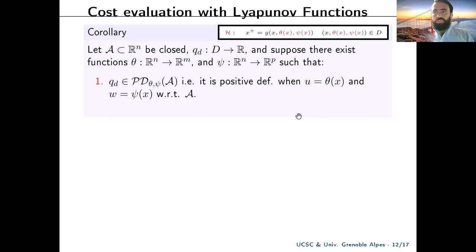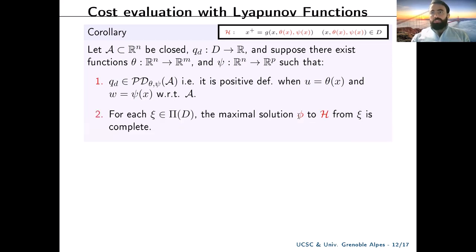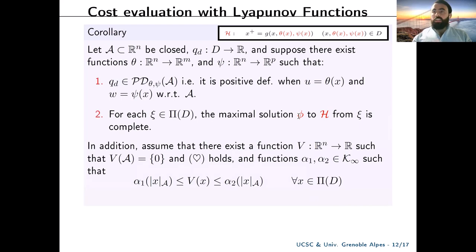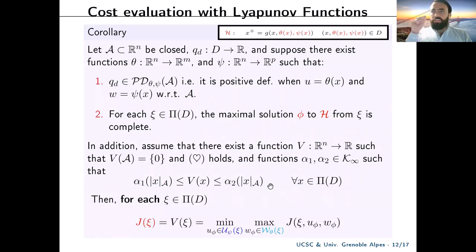In the case where the stage cost is positive definite when both players play optimally with respect to calligraph A, and for each initial condition the maximal solution of the closed-loop system is complete, and if B is bounded by class K-infinity functions alpha-one and alpha-two, and B vanishes in calligraph A, and the discrete Isaacs equation holds, then for each initial condition in the projection of the playable set in the state space, the cost is exactly B of the initial condition and it is a saddle point.